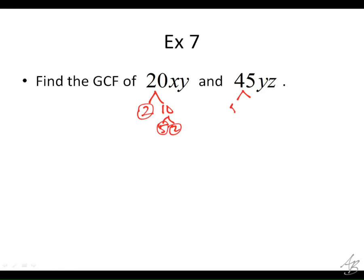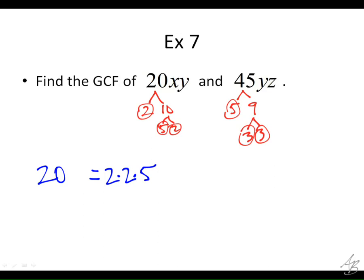45 would be 5 times 9. 5 is prime, 9 is not — 3 times 3. So we're going to write the prime factorizations. 20 is going to equal 2 times 2 times 5. Notice that I left a little space here next to the 20, because we're not really doing 20 — we're doing 20XY. So we multiply by X and by Y to get the variables into our prime factorization.